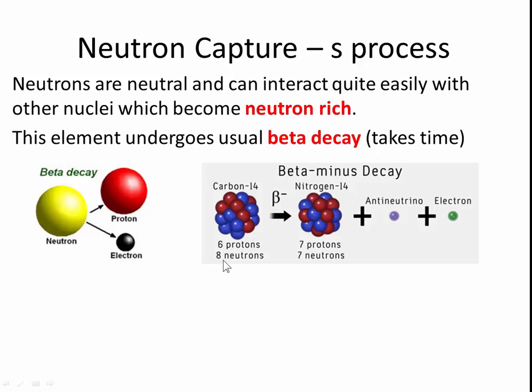This extra neutron turns into a proton here, so we have one fewer neutron, one more proton, plus an anti-neutrino and an electron. This is a slow process because beta decay takes time. You have to wait a long time for this to happen.